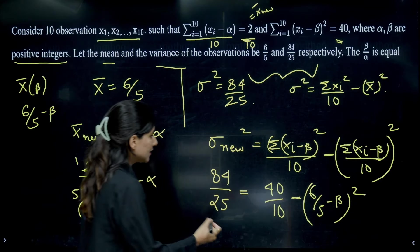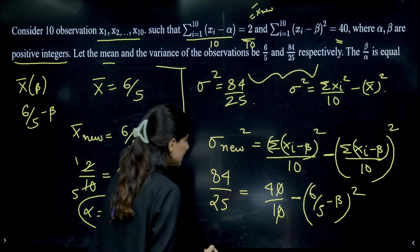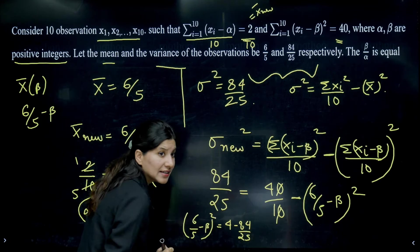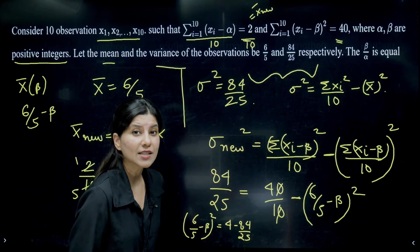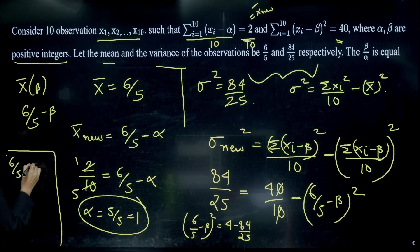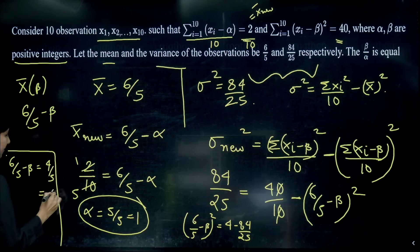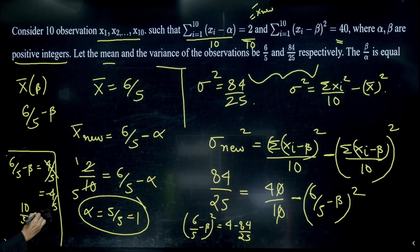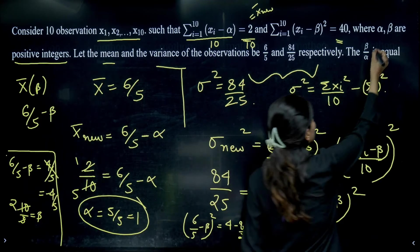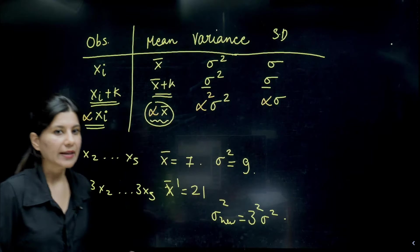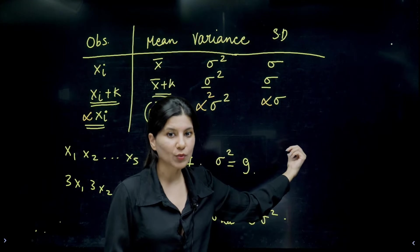From 6/5 − beta = +4/5, we get beta = 2/5 — rejected because beta must be a positive integer. From 6/5 − beta = −4/5, we get beta = 10/5 = 2. So beta = 2 and alpha = 1, giving beta/alpha = 2. This is the second type of question. The table is very important — with it, you can solve these questions very easily.